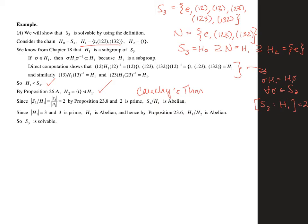H1 itself has three elements in it, so it's abelian. And then if we mod out by the identity, we just get H1 back, so it's still abelian. And so therefore, we have a solvable group.